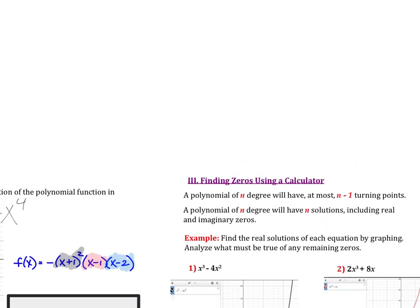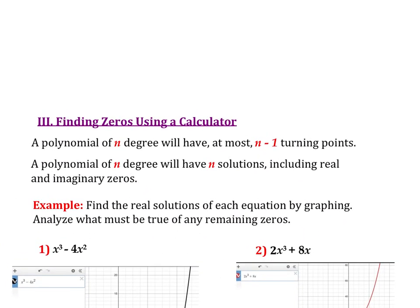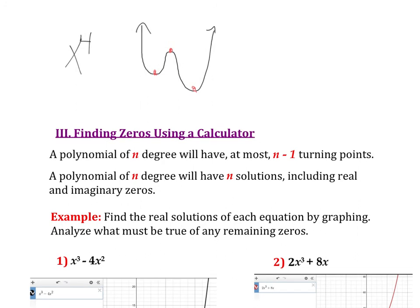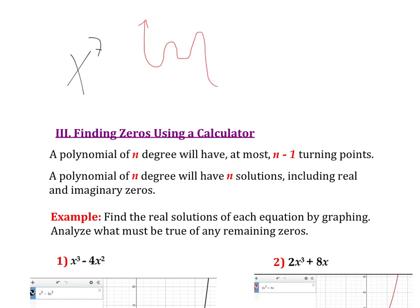Last type of problem: finding zeros using a calculator. I'm using Desmos — all hail Lord Desmos. A few things to keep in mind. A polynomial of nth degree will have at most n minus one turning points. So what that means is if I had x to the fourth, it could have three turning points — there's one turning point, two turning points, three turning points. These turning points are essentially maxes and mins. If I had x to the seventh power, I could have up to six turning points. So maybe it looks like one, two, three, four, five, and six turning points — that might be what an x to the seventh could look like.